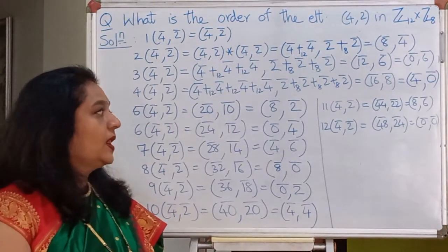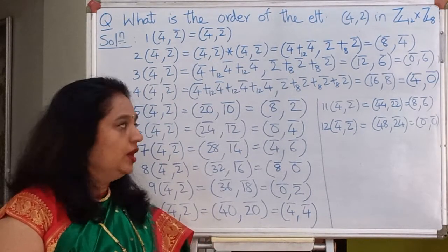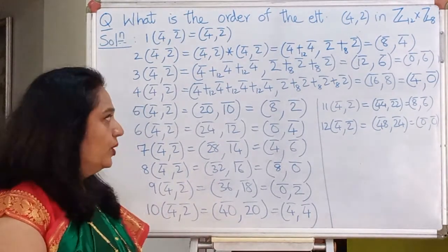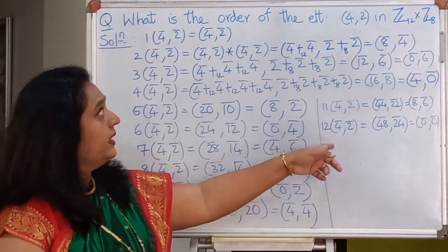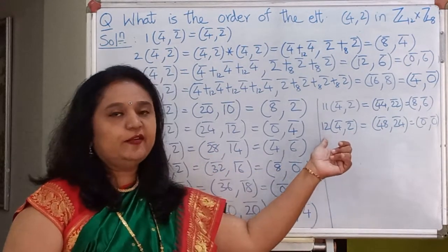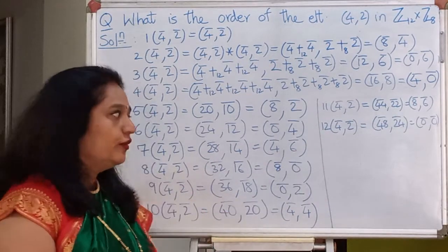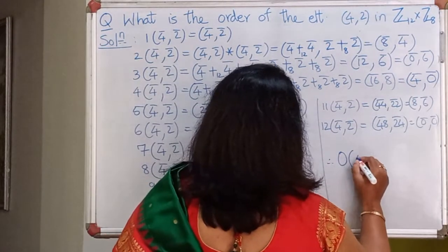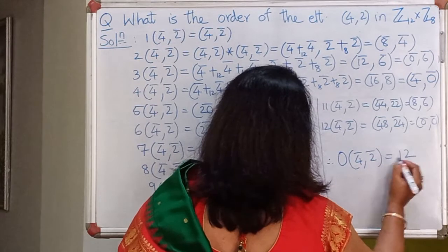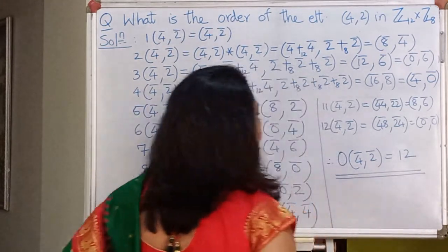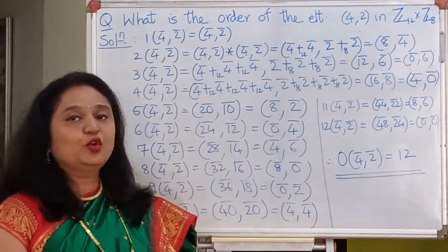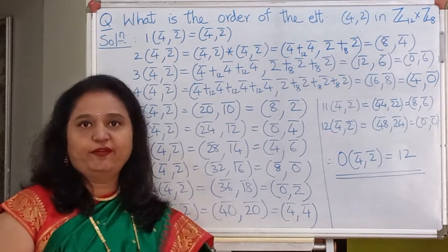You can pause the video, go through the calculations, and then restart. You will notice that the identity of Z12×Z8 is (0̄,0̄), and the first time I hit the identity is at the multiple 12. So by definition, the order of (4̄,2̄) is 12. That answers the question: the order of this element in Z12×Z8 is 12.